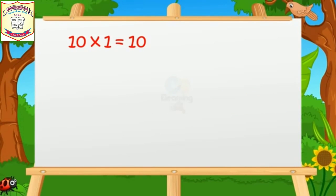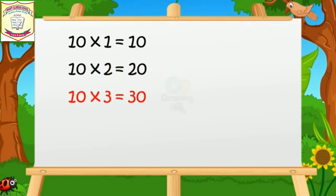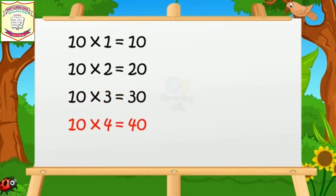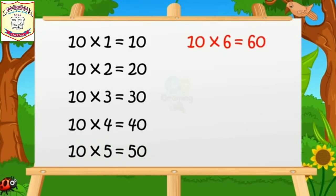Ten ones are ten. Ten twos are twenty. Ten threes are thirty. Ten fours are forty. Ten fives are fifty.